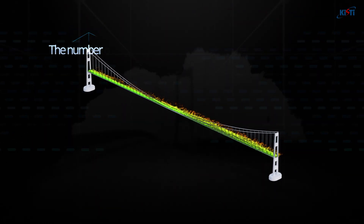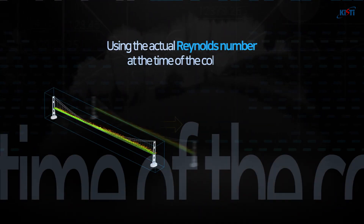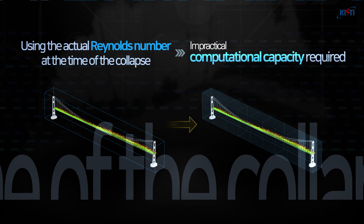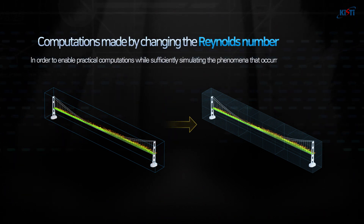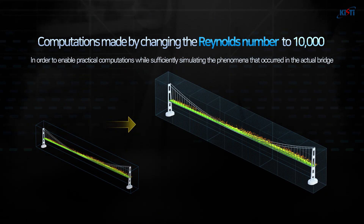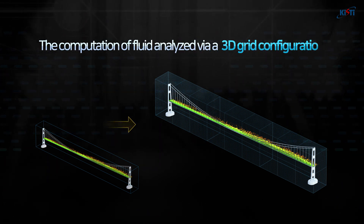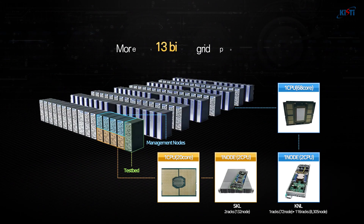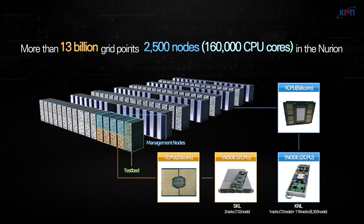The number of grid points required for analysis is related to the Reynolds number, but if you were to use the actual Reynolds number at the time of the collapse, a computational capacity impossible for practical analysis would be required. Therefore, computations were performed by changing the Reynolds number to 10,000 to enable practical computations, while also sufficiently simulating the phenomena that occurred in the actual bridge. The fluid flow is analyzed by constructing a grid system in three-dimensional space, with more than 13 billion grids and 2,500 nodes in the supercomputer Nurion used for this simulation.